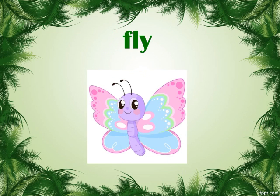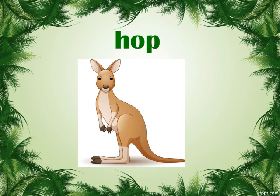What is in the picture? It's a butterfly. How does it move? It flies. What is in the picture? It's a kangaroo. And how does it move? It hops. Hop means jump.